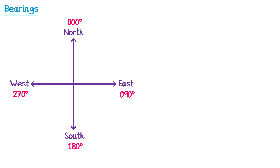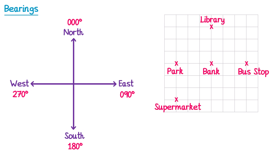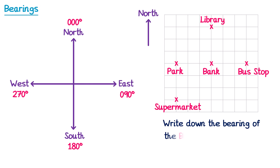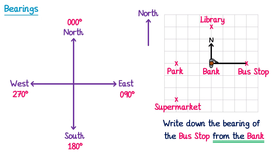Let's have a look at how we can use bearings in some questions. So here we have a map of a town with some locations. We're going to specify that north goes up the page, and our first question is to write down the bearing of the bus stop from the bank. When the question says from the bank, this means we need to imagine we were stood at the bank. We place our person at the bank, face north and draw a north line. We then turn clockwise until we face the bus stop. We've turned through one quarter of a turn, or an angle of 90 degrees, so the bearing will be 090 — remembering that bearings must be three figures.